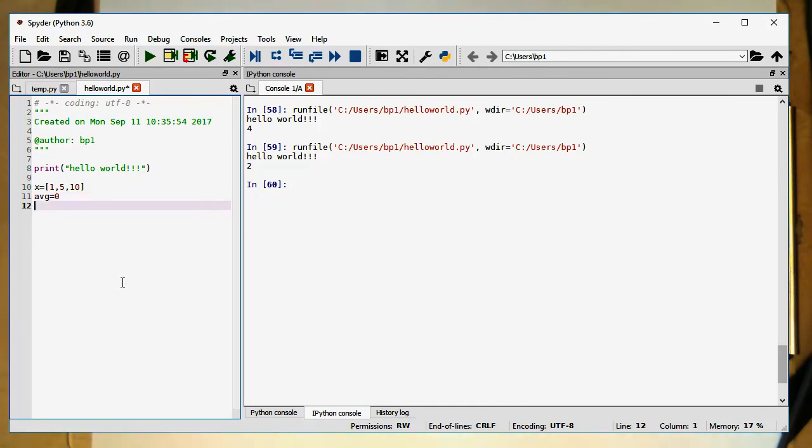We create this variable here where we sum up the stuff. And then for i in range to 3. And we see already here the environment automatically does the indent here. And so I do avg plus x of i.